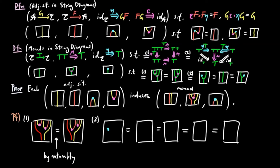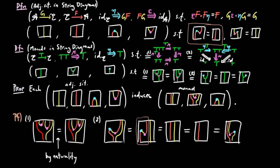For the unit law, we can reshape the string diagrams so that we can make a substitution of the triangle identities of the adjoint situation, giving us the identity of the endofunctor.